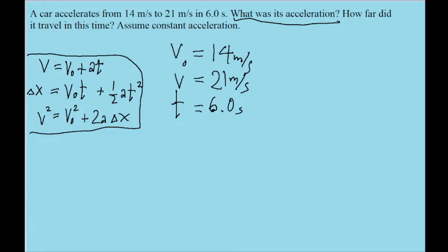So this first one, v equals v-naught plus at, is what we're going to use. We're going to want to solve it for A. This is just some algebra now. We can first subtract v-naught from both sides, which gives us v minus v-naught equals at.